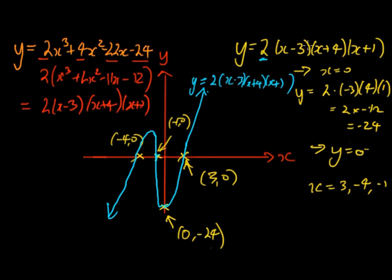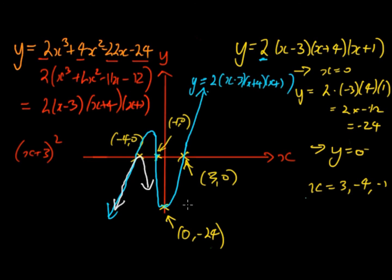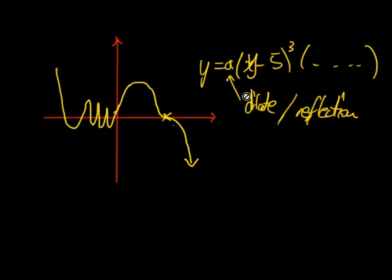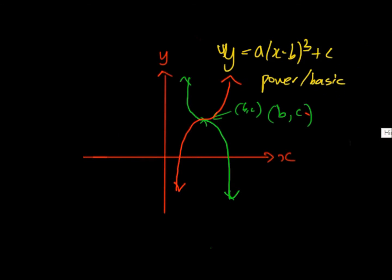Just be careful: if all brackets are to the power of 1, the graph passes straight through each x-intercept. If one bracket is squared — like (x+3)² — the graph has a turning point at that x-intercept. And if a bracket is cubed — like (x+a)³ — as we showed earlier in the power/basic form, the graph will have a point of inflection at that x-value.